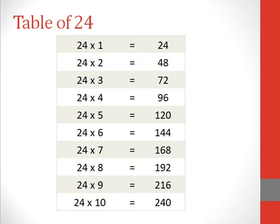Table of 24. 24 1s are 24, 24 2s are 48, 24 3s are 72, 24 4s are 96, 24 5s are 120.